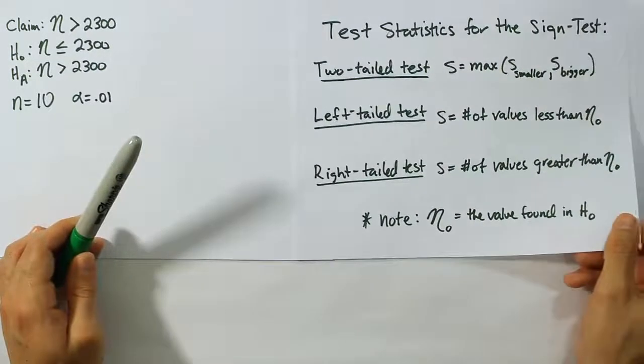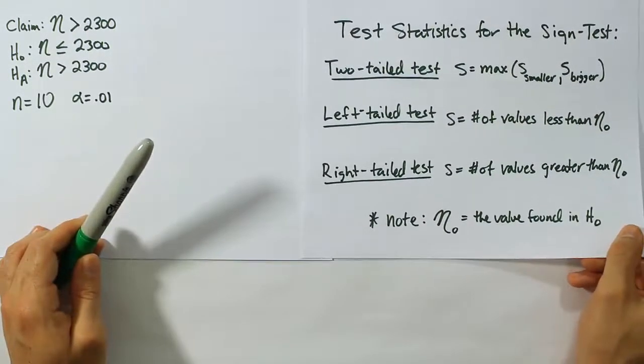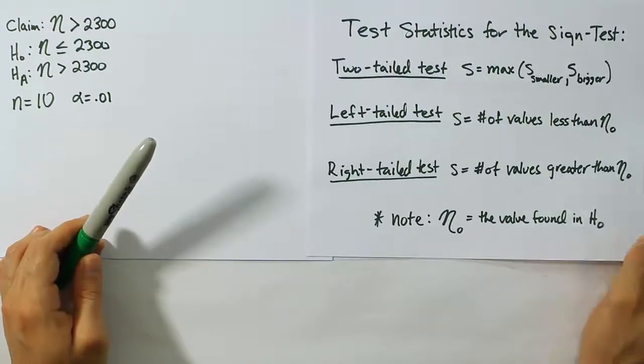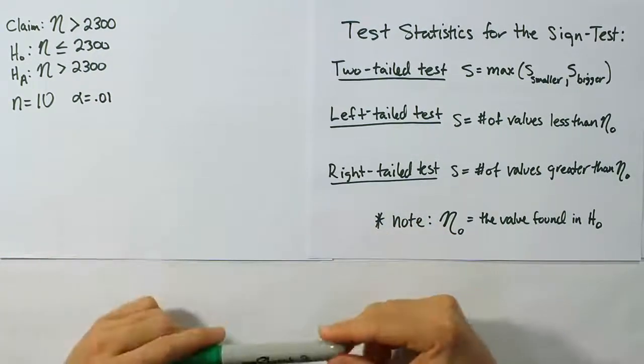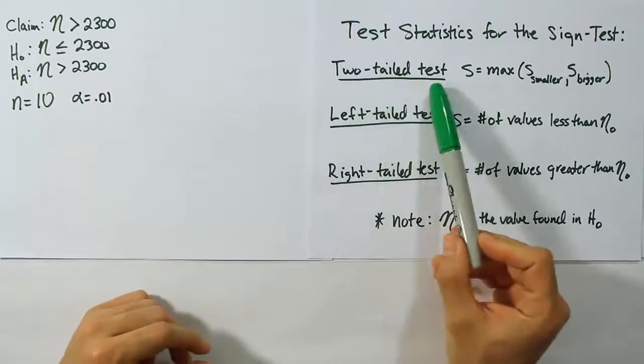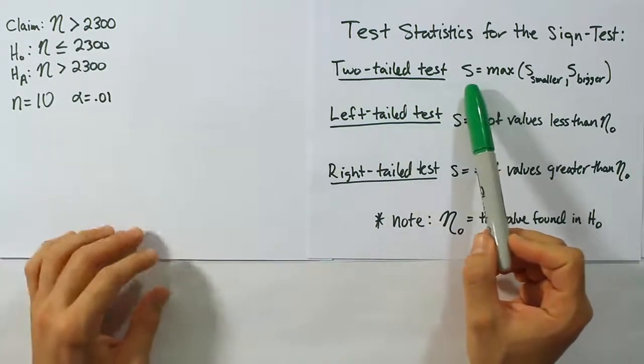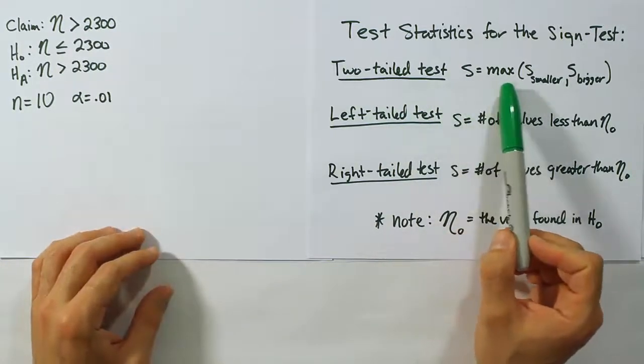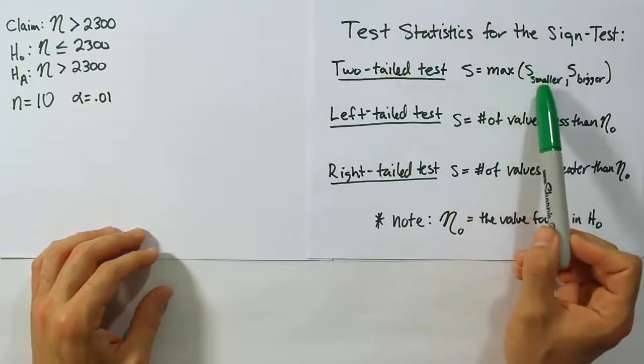It is a description of how you get the test statistic when working problems in the sign test. For a two-tailed test, we saw in those other videos that our test stat is S max, which is the maximum of S smaller and S bigger. Remember what S smaller was - it was the number of values smaller than the η naught value.